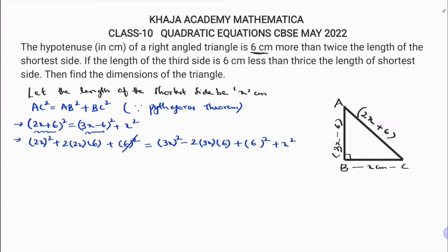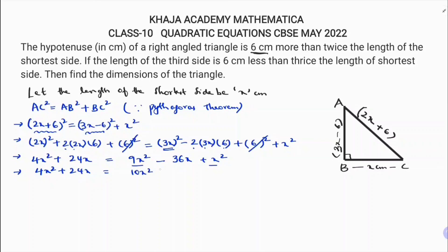The 6² terms on both sides cancel. Expanding gives: 4x² + 24x equals 9x² − 36x + x². Collecting terms on the right: 10x² − 36x.